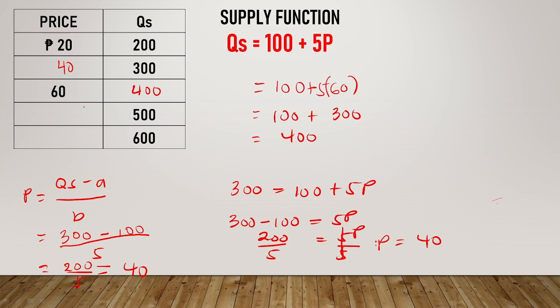So how about this one? 500 minus 100 is 400, divided by 5. 400 divided by 5, so 80.